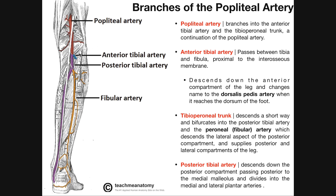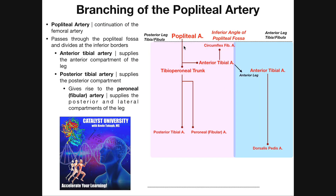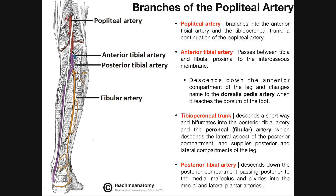Looking at this picture, we have the popliteal fossa in this diamond-shaped region. Up here is the superior angle — above this, the artery would be the femoral artery, but once it crosses through the superior angle and enters the popliteal fossa, it becomes the popliteal artery. This appears to be the biceps femoris, and over here the semitendinosus and underlying semimembranosus. The popliteal artery descends distally and exits via the inferior angle, approximately right here.